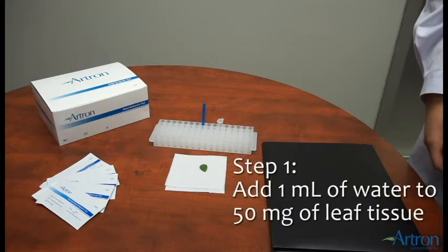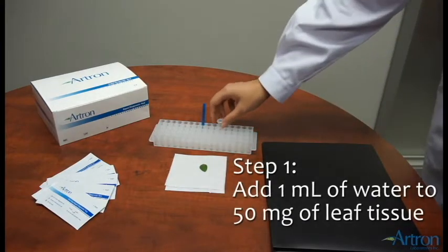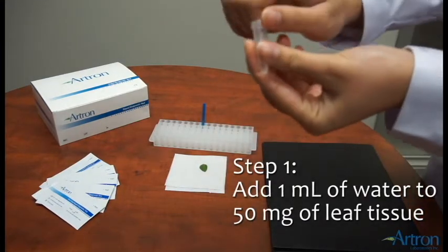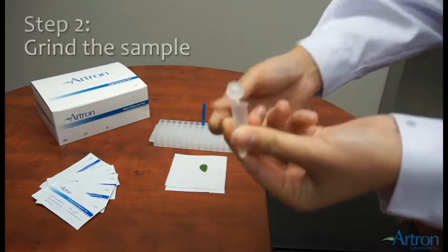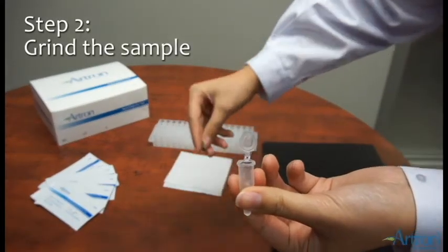To prepare the sample, add 1 milliliter of water with 50 milligrams of leaf tissue and grind the sample with tools such as a mortar and pestle.